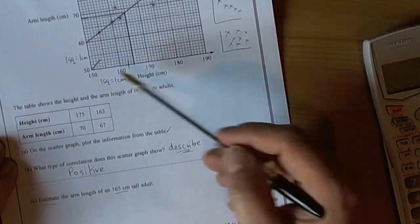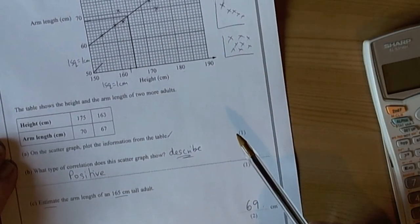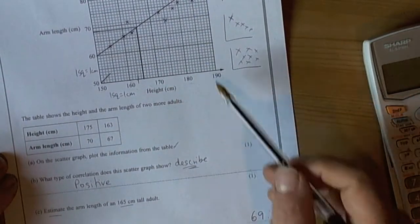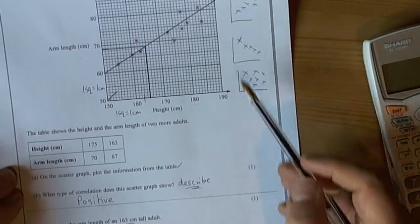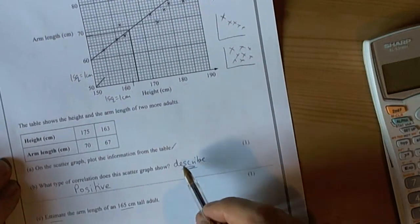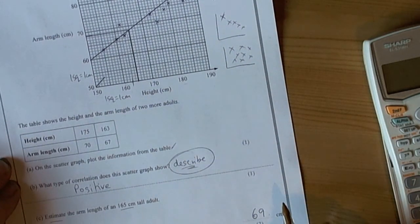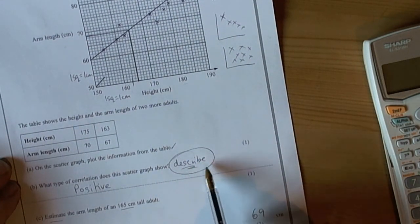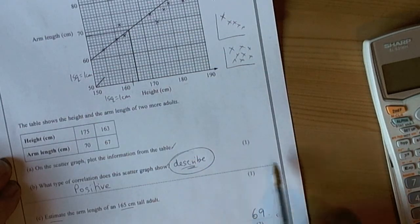So that's the kind of question they could ask you on scatter graphs. Quite a popular question on unit one. So it's worth learning it well, particularly the types of correlation. And watch out for that describe word when they want to put in a slightly harder question on scatter graphs.